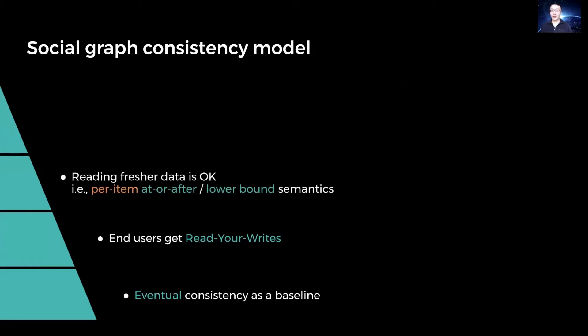The consistency guarantee that application developers get is a sort of lower bound semantics, or at-or-after what the app just wrote on a per-item basis. Applications can query the latest data if necessary, though this option could come with high latency and low throughput, so should only be used sparingly.